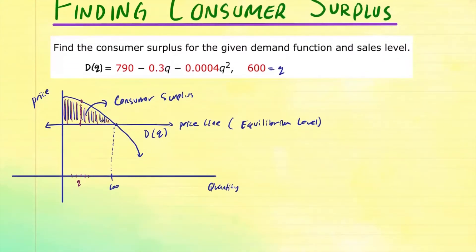So consumer surplus, it's going to be the integral from zero to that unit q, difference between the demand function and the equilibrium level. So let's call that D(q) minus p, and dq.